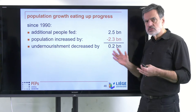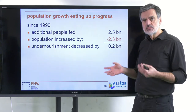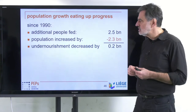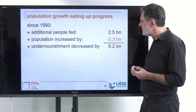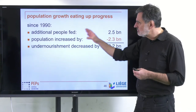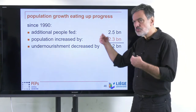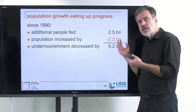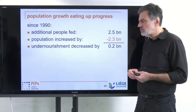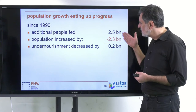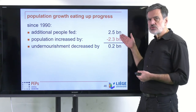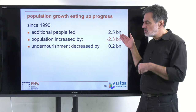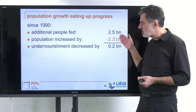Of course, just doing these simple balances may be a little too simplistic, because economics, trade, and other factors are important as well — and they are influenced by population growth and economic development. So it's not necessarily as simple as shown here. Nevertheless, we see that we are feeding 2.5 billion more people today than in 1990, which is a dramatic, gigantic shift, while the decrease in undernourishment is minor compared to that.